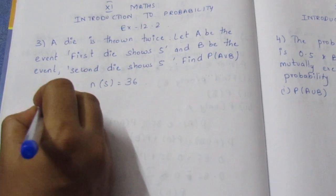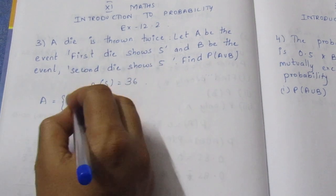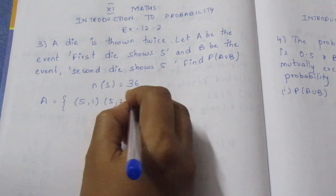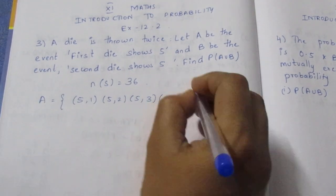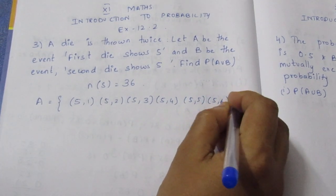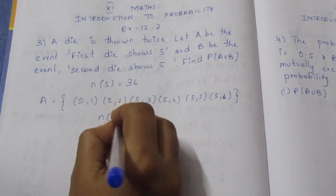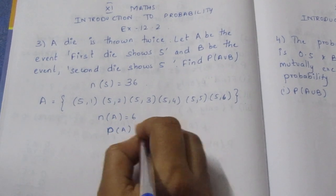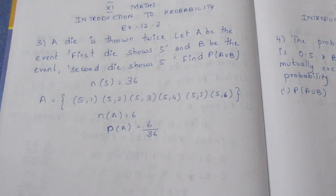Event A is: first die shows 5. So the first number is 5, giving outcomes 5,1 — 5,2 — 5,3 — 5,4 — 5,5 — 5,6. So N of A is 6, and P of A is 6 by 36. We can also find A union B and solve it.